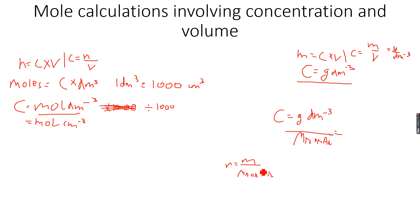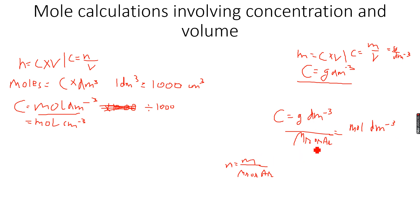Instead of grams we now get moles, and the dm³ remains unchanged, so this becomes moles per dm³. That's how the conversion happens — given mass divided by molecular mass or atomic mass gives moles, the dm³ remains unchanged, and we go from gram per dm³ to mole per dm³.